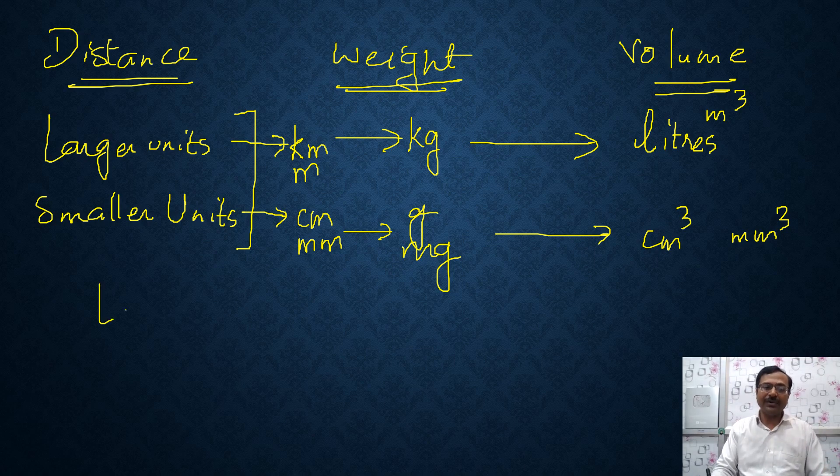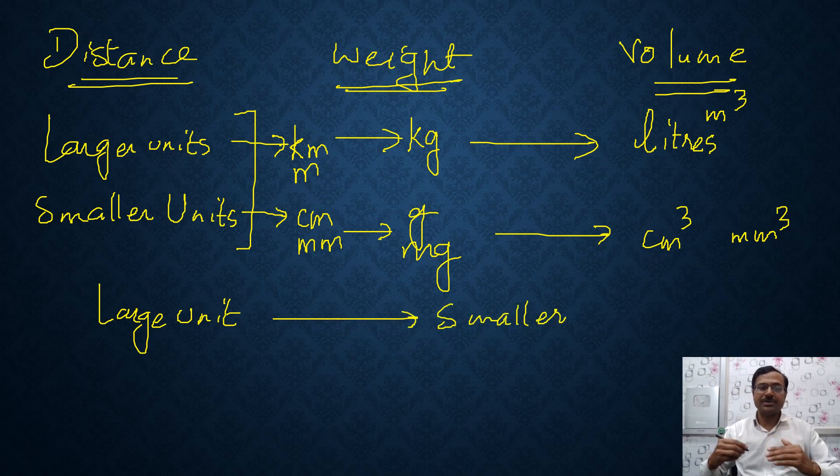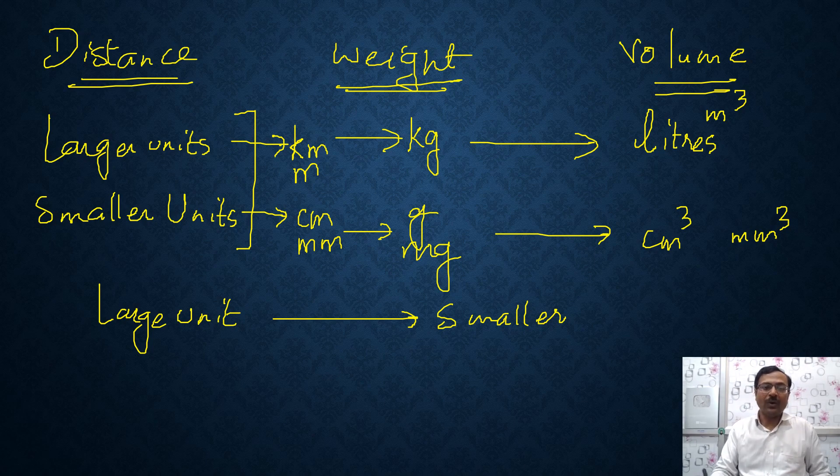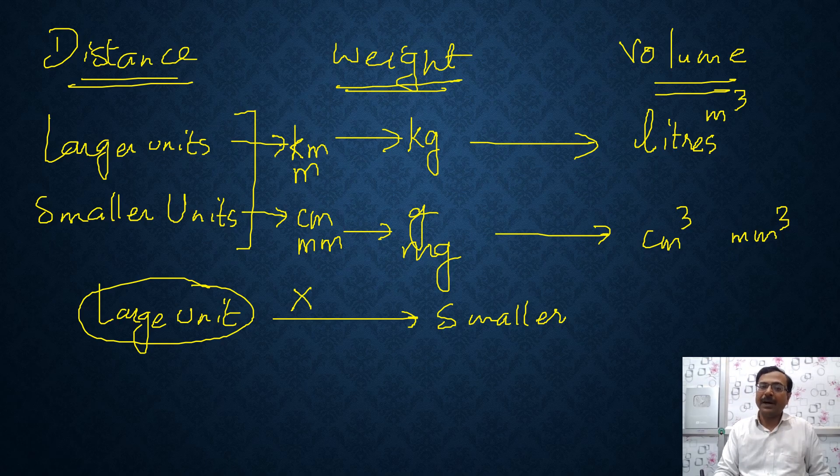If you convert a large unit into a small unit, like if I want to convert kilometers to centimeters or kilometers to meters or meters to millimeters or kilogram to milligram, liters to centimeter cube. So I am converting a big unit, large unit into a smaller one. In that case, I always multiply the large unit by something, multiply by something. So let's call that something as x. Now, what is that something that depends on which unit you are converting into the smaller unit.